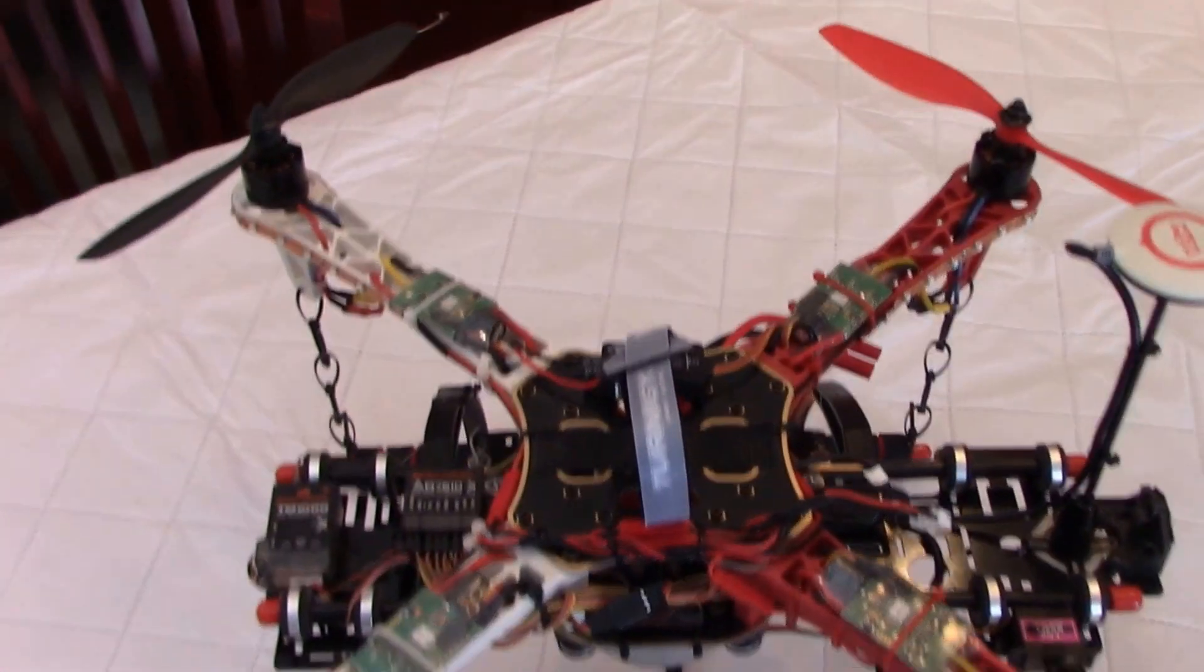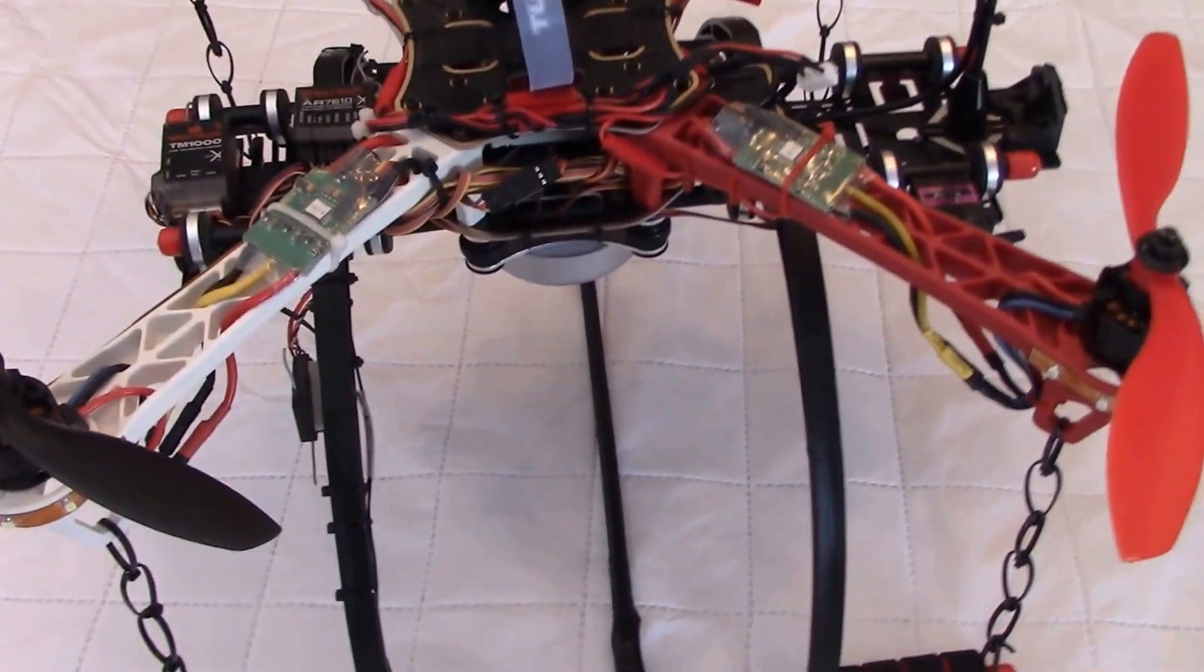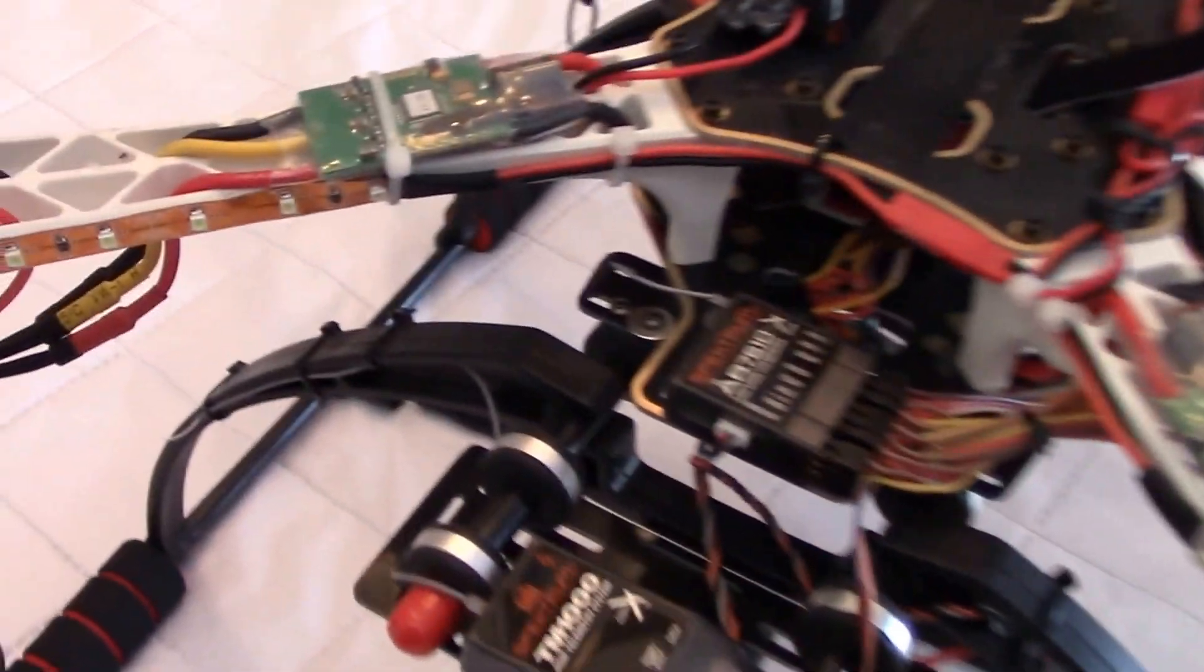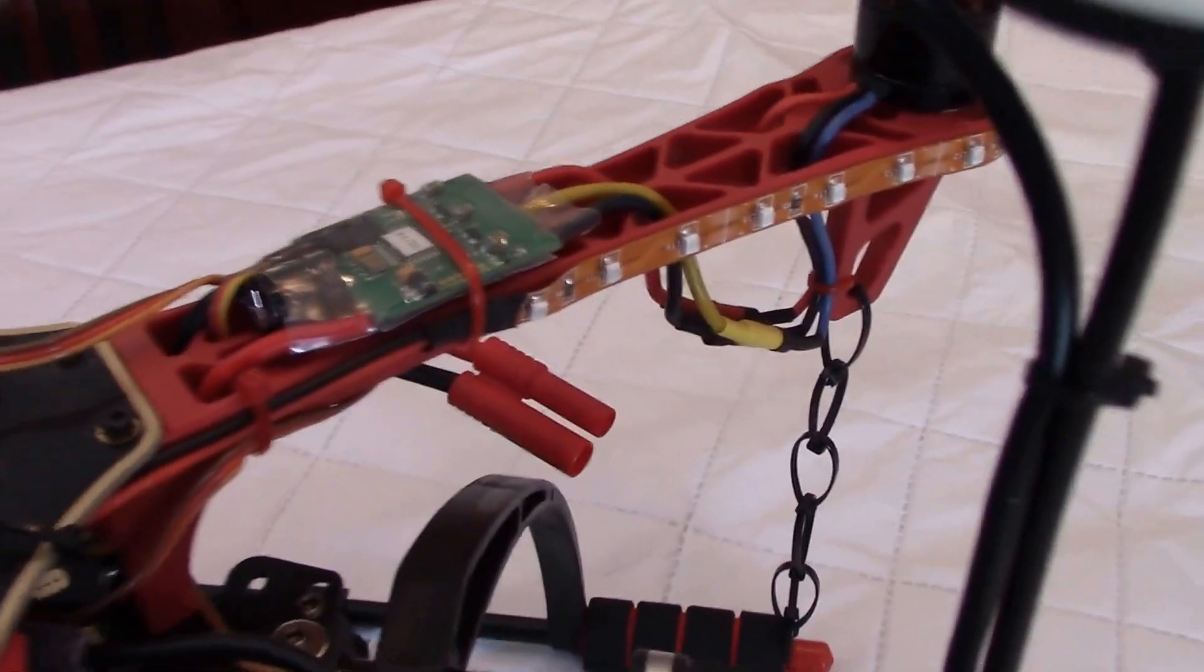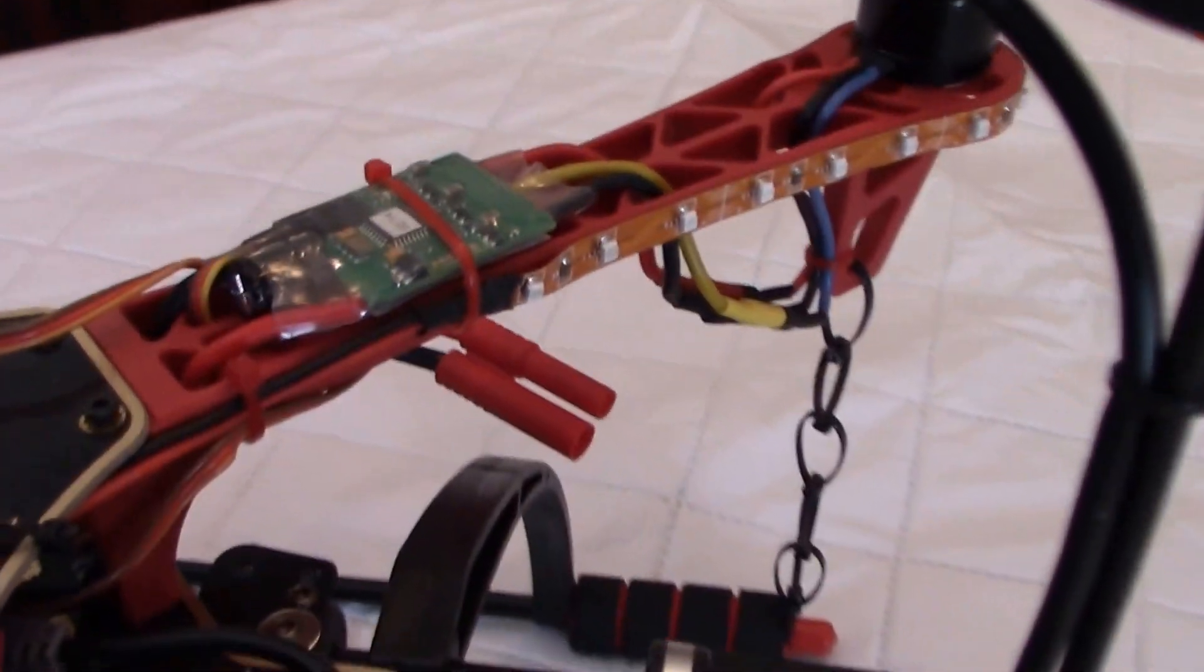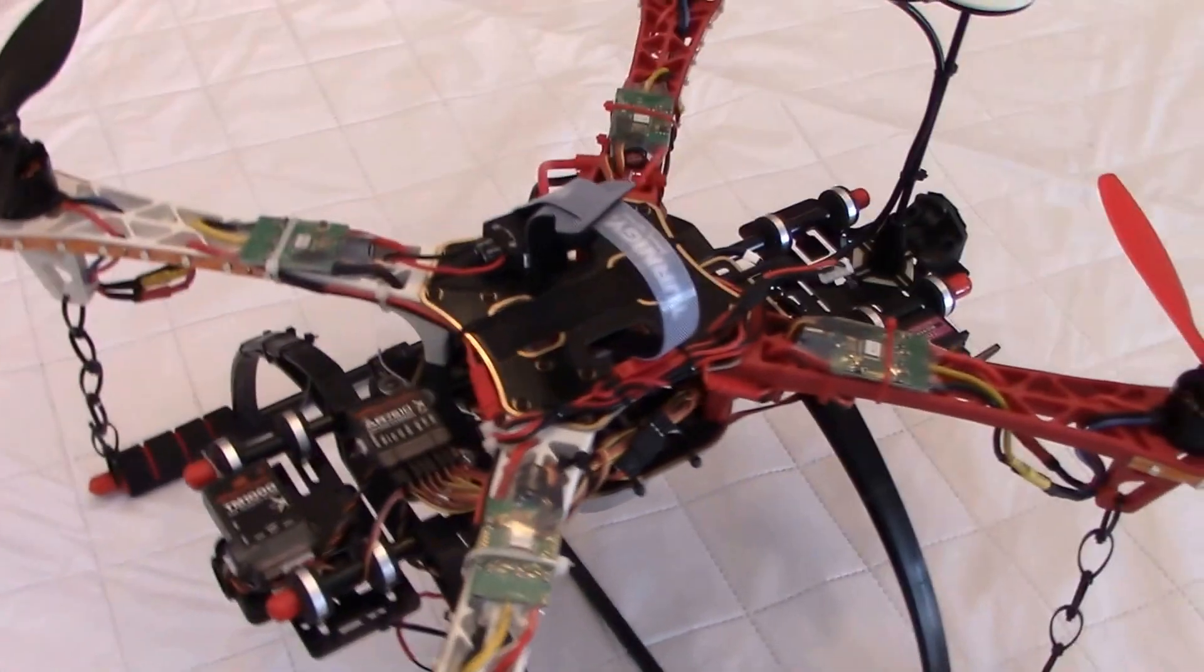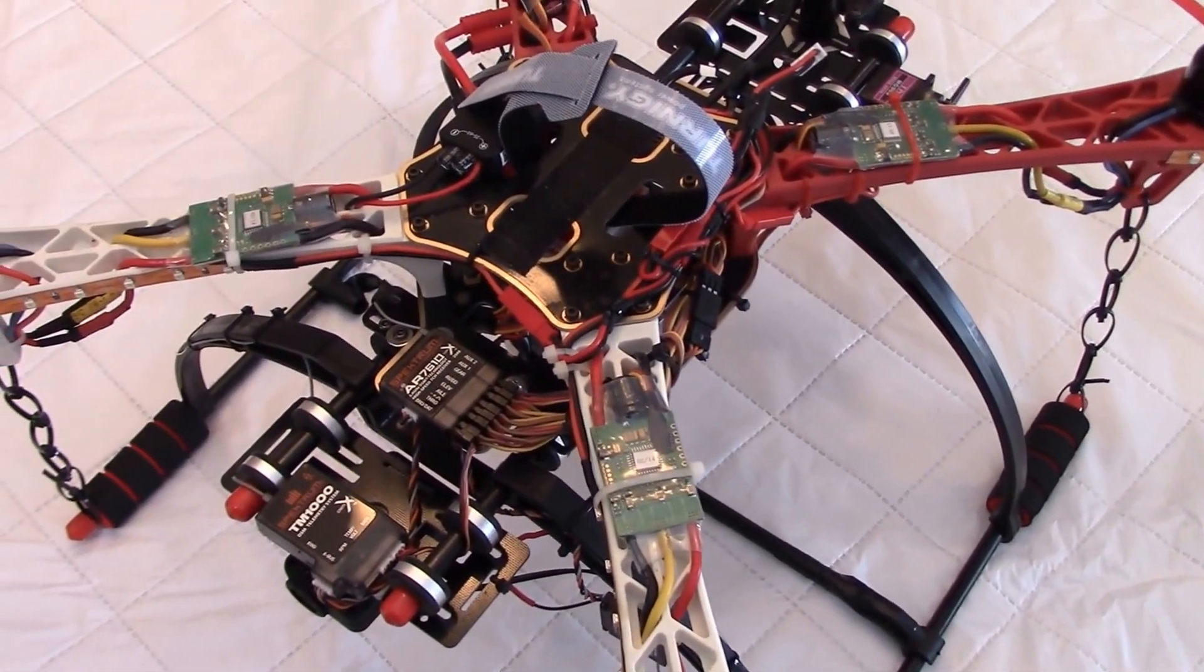To help with orientation I also added LEDs on the side. You can see them here, LEDs on the side. White for the white arms and red for the red arms, just to help with orientation. In my build I decided to have red for the back and white for the front. I'm going to install a battery and I'll show you how bright these LEDs are.